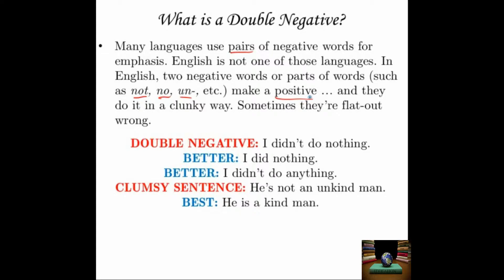For example, it's a double negative to say 'I didn't do nothing.' Literally, in English grammar, that means 'I did do something.' But of course, anybody who says 'I didn't do nothing' is actually trying to tell you 'I didn't do anything — I have committed no crime, I have offended you in no way, I have done nothing wrong.' But instead, what comes out is 'I didn't do nothing,' and it sounds like you did do something, and it also makes the person saying it sound like an idiot. It is better to say 'I did nothing' or 'I didn't do anything.'